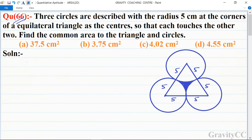Side of the equilateral triangle is 5 plus 5, which is 10 centimeter, and radius of the circle is given as 5 centimeter.